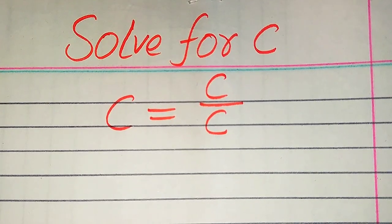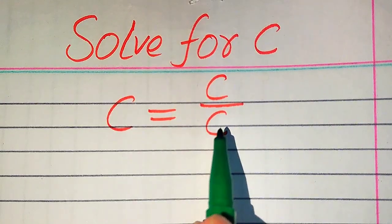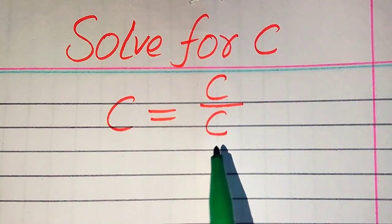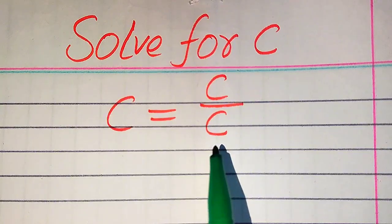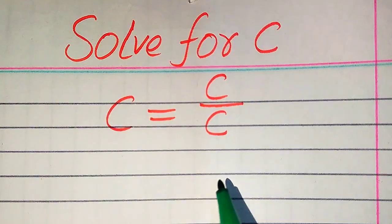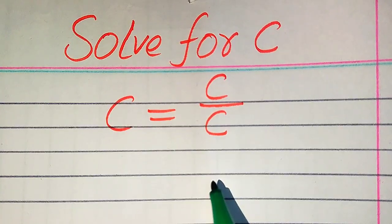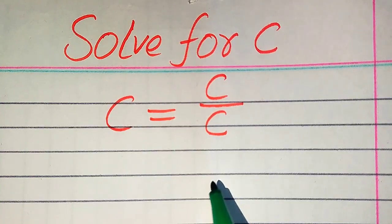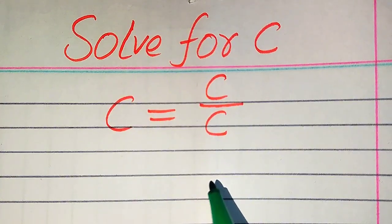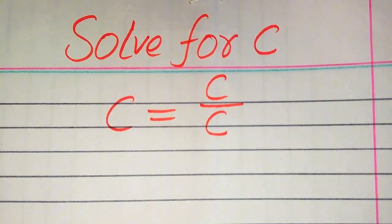Hello everyone. How to solve this problem for the values of c, if we have c equals c divided by c? We solve this problem for all the values of c. First, we find all the roots of this equation, and at the end we will verify which of the roots are solutions and which are extraneous roots. We will solve this problem using two methods.